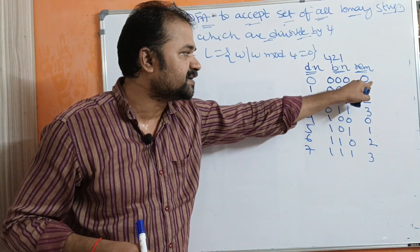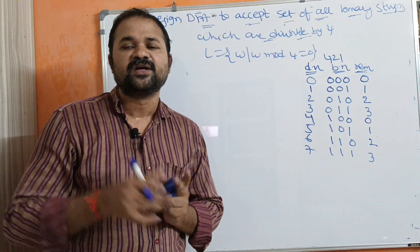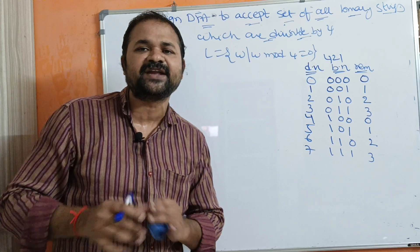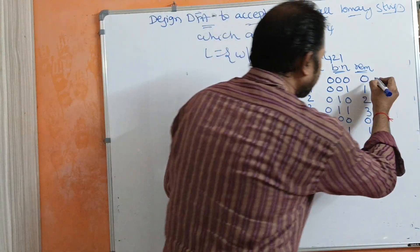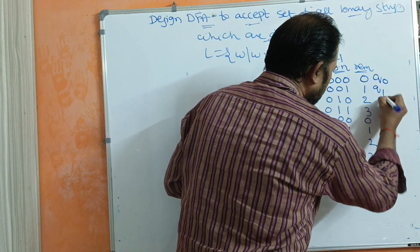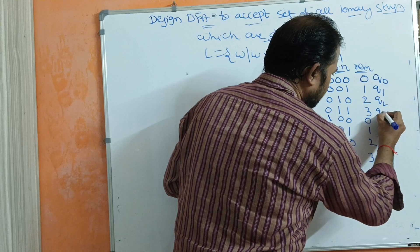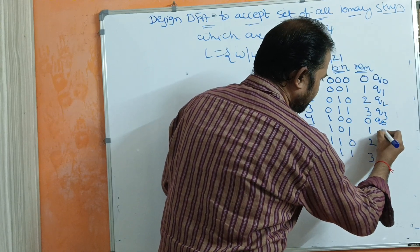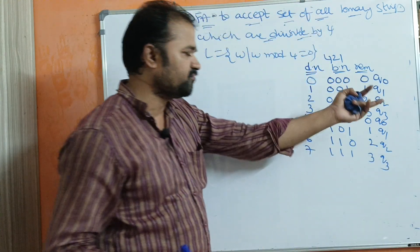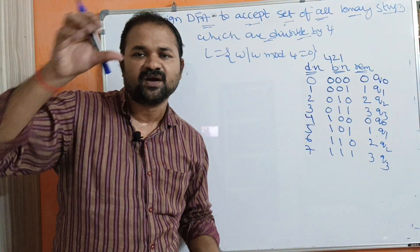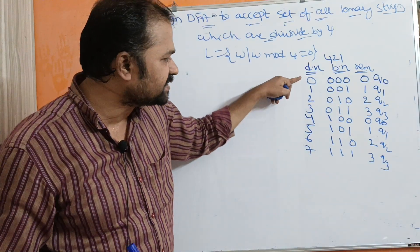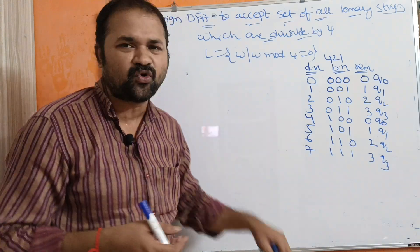Q0 is for storing remainder-0 numbers, Q1 for remainder-1 binary numbers, Q2 for remainder-2 binary numbers, and Q3 for remainder-3 binary numbers. The remainder-0 binary numbers include 0, 4, 8, 12, and so on — all numbers divisible by 4.